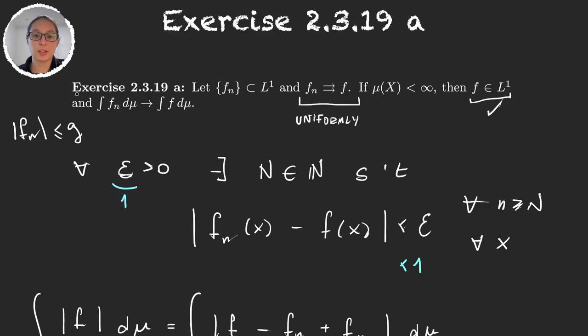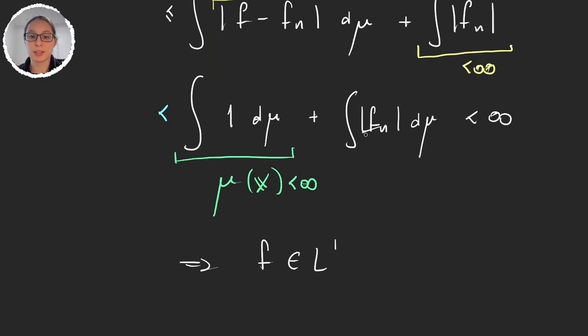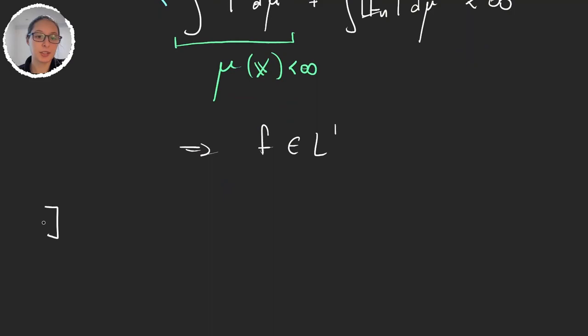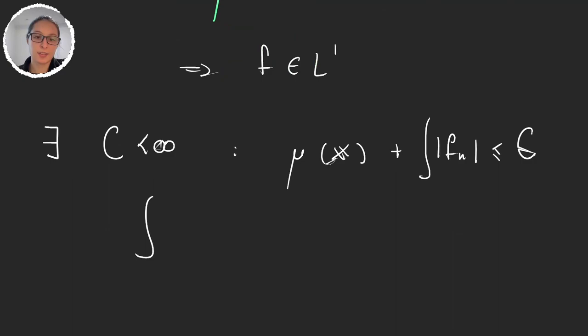So how do we do that? Well, here we have something that relates the integral of f_n with the measure of our space, and we said that this sum was finite. So what we have here from the last line is that there exists some constant that can be very big but it's just a finite number, such that the measure of my space plus the integral of these functions is less than or equal to this number C. So the integral of |f_n| is less than or equal to C minus the measure of my space.